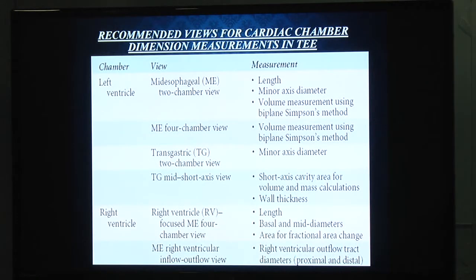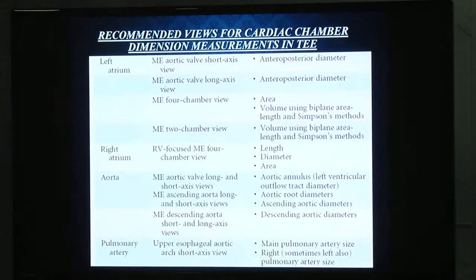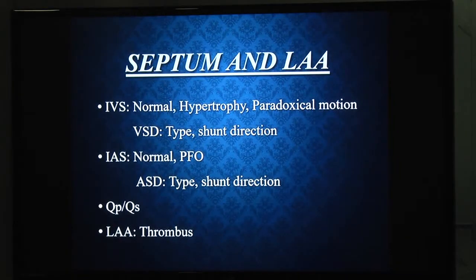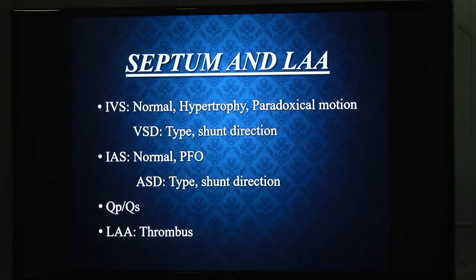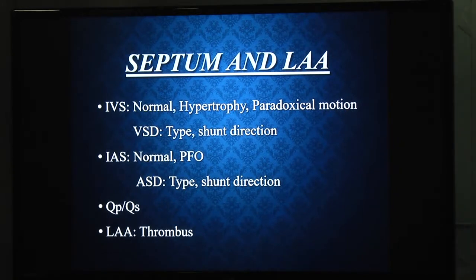These are the different views used to assess left and right ventricles as discussed. Coming to the septum and left atrial appendage, these are also important considerations. The interventricular septum and inter-atrial septum should be assessed separately — reporting whether normal, hypertrophied, or showing paradoxical motion of the IVS; any VSD with type and shunt direction. For the inter-atrial septum, assess for bulging, normality, PFO, ASD type and shunt direction, and any congenital anomalies. QP:QS should be calculated if there are inter-atrial defects. The left atrial appendage should be assessed for thrombus.